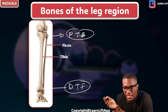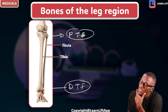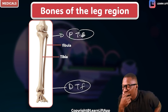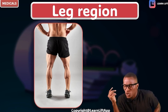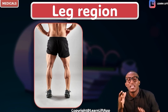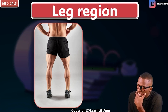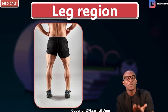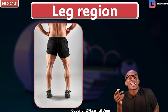What forms the leg? The leg is formed by two long bones — the tibia and the fibula. The tibia is medial and thick; the fibula is lateral and thin. At the posterior aspect of the leg there is a thick prominence. That thick prominence is formed by the triceps surae muscle, and we call that part the calf.